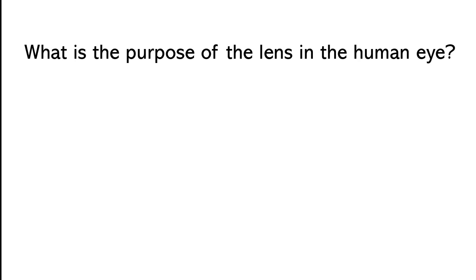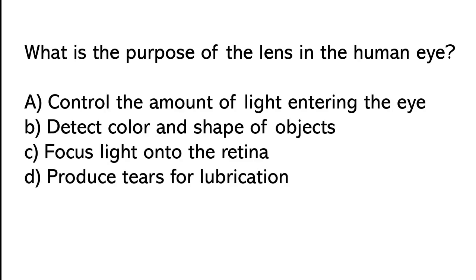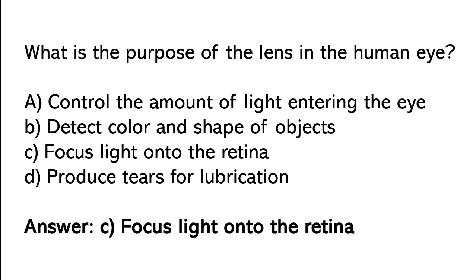What is the purpose of the lens in the human eye? Control the amount of light entering the eye. Detect color and shape of objects. Focus light onto the retina. Produce tears for lubrication. So the correct answer is option C: focus light onto the retina.